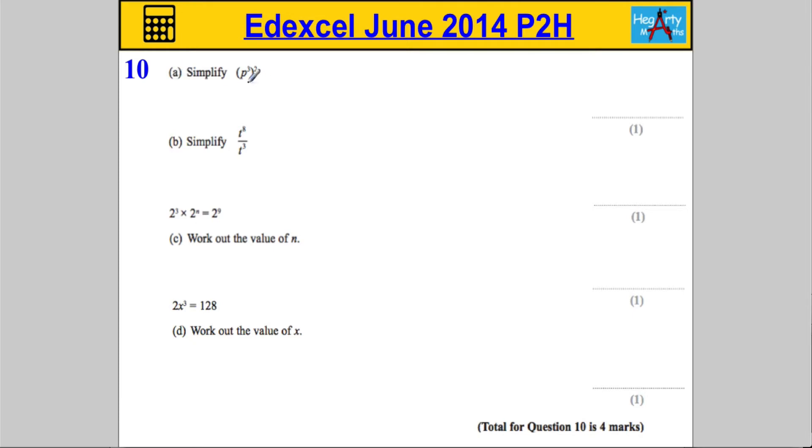We're asked to simplify p to the power of 3 all squared, and that means essentially you're going to multiply the powers together because that means p to the power of 3 times by itself p to the power of 3. You would add those powers in that instance. Here it's written slightly quicker for us. We're going to multiply the powers. We're going to get p to the power of 6.